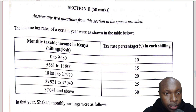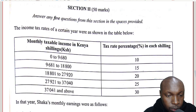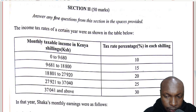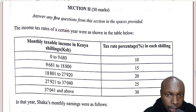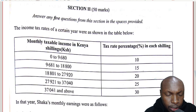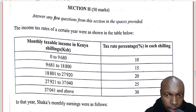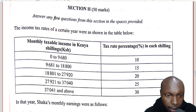Hello viewers and welcome to the lesson. I would like us to solve this question on income tax, KCC 2017. The question reads: the income tax rate of a certain year was shown in the table below. The table shows the monthly taxable income in shillings and the tax rate percentages in each shilling, with slabs given.